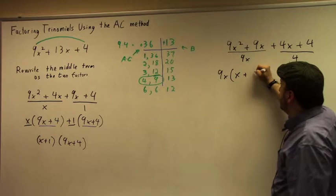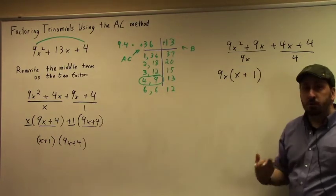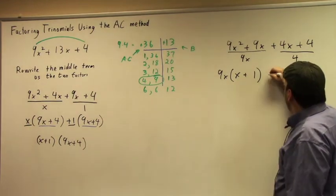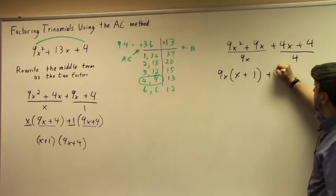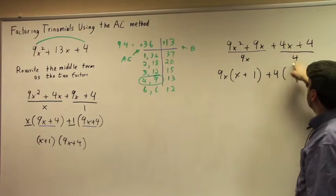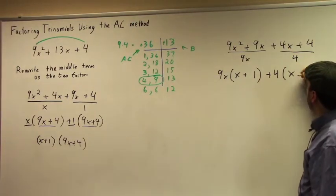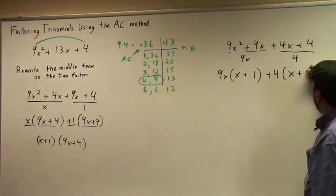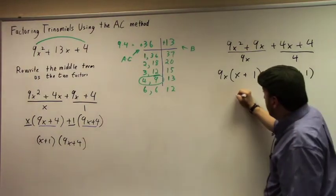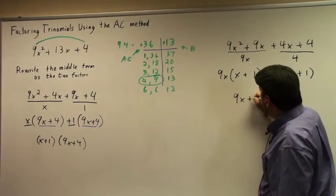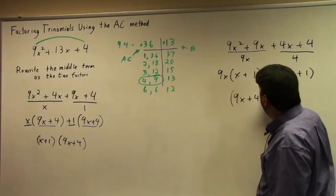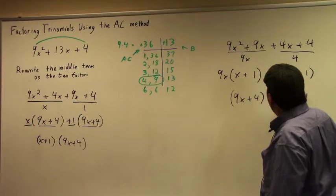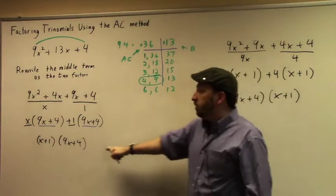Now when I factor this out, I'm going to get that 9x on the outside. When I do 9x² divided by 9x, that's going to leave me with x. Remember, we're dividing here, so when something cancels out, you're going to have a 1 left over. Here, very similarly, we're going to have 4. That's going to leave us with x, and then 4 divided by 4 is going to leave us with 1.